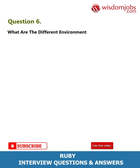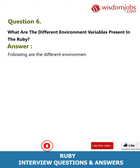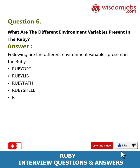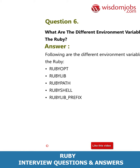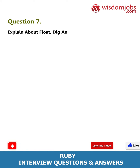Question 6: What are the different environment variables present in Ruby? Answer: The following are the different environment variables present in Ruby: RUBY_OP, RUBY_LIB, RUBY_PATH, RUBY_SHELL, and RUBY_LIB_PREFIX.